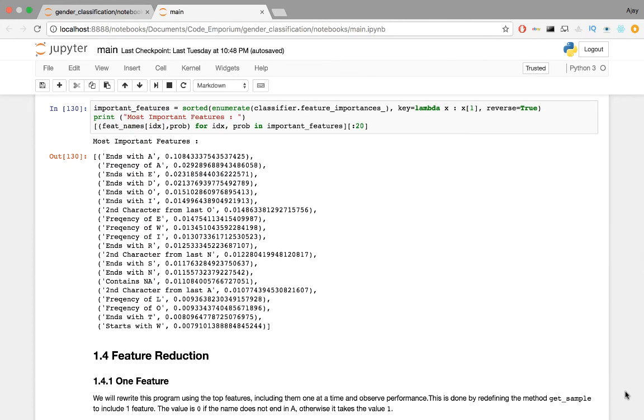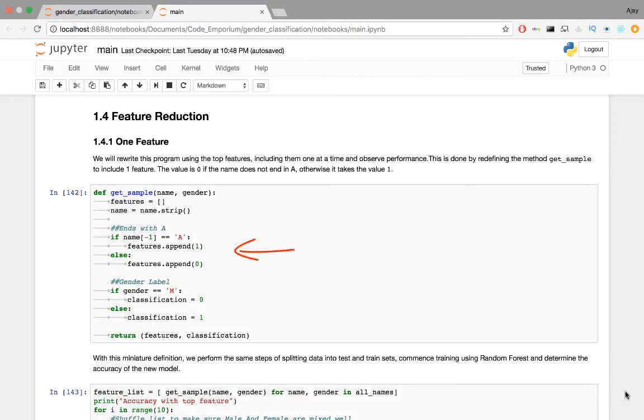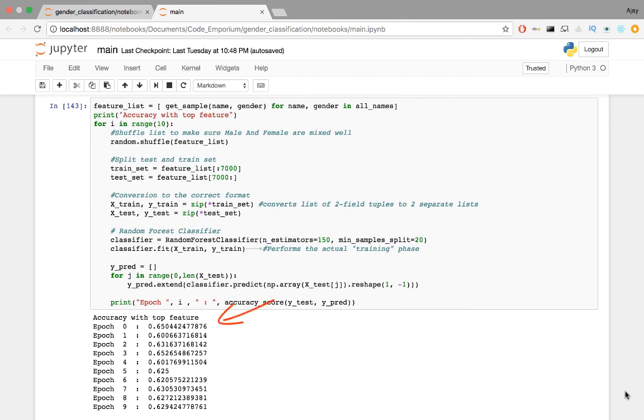Everything we do from here on out is feature engineering. I displayed the top 20 features here. This list may be a tad different in every execution. One time when I executed this, four of the most important features were checking if the name ends with A, determining the frequency of A, checking if the name ends with E, and checking if the second-to-last character was an N. I'll rewrite the program including one feature at a time and observing its effects. For the first round, I check if the name ends with an A. Surprisingly, I'm able to get a 60% to 65% accuracy just by checking this condition.